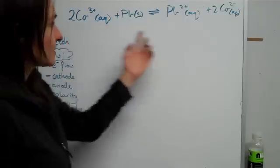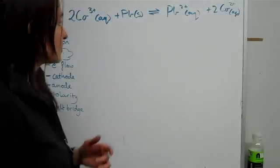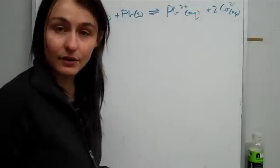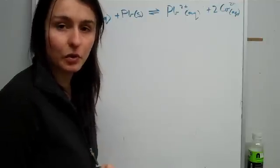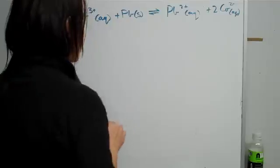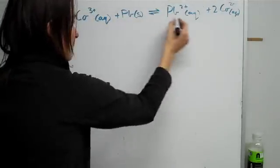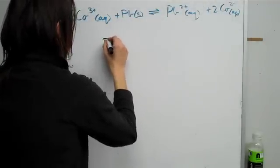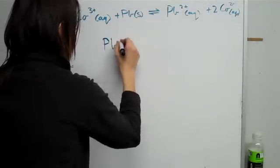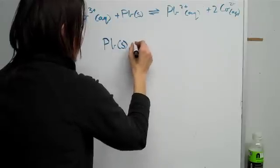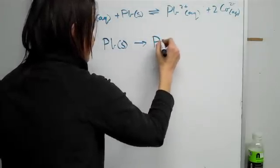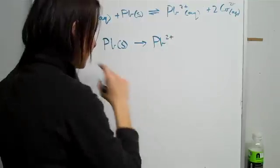Now if you're just given the equation on its own, what you need to do is really break it down and see what's happening to the individual components within that reaction. So let's just break it down into lead. Let's just write out lead solid somehow turns into lead ions.